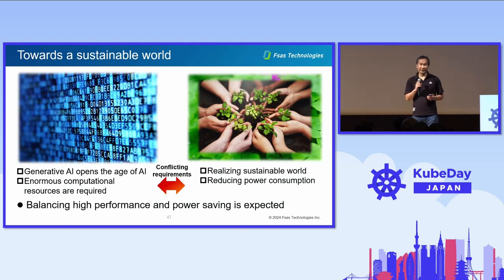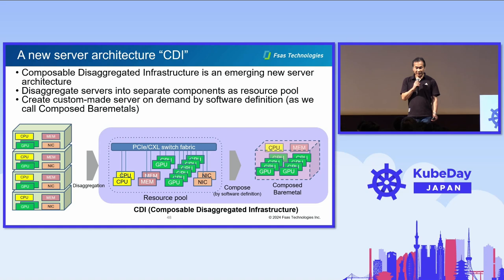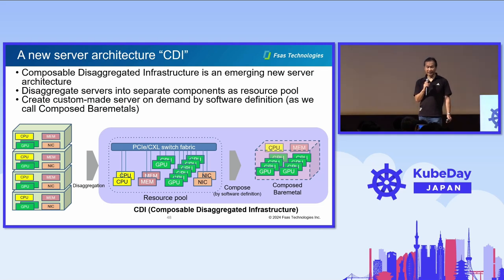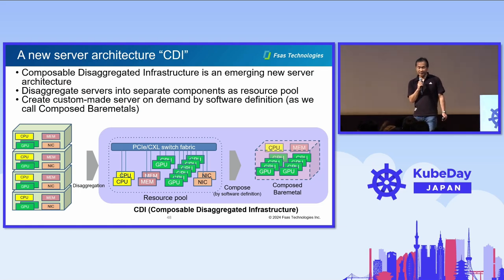Composable disaggregated infrastructure, CDI, is expected to be a solution. CDI is an emerging new server architecture. It disaggregates existing servers into separate components. Each component is connected to a PCIe or CXL switch and they work as a resource pool. By configuring the switch, users can create a custom-made server on demand by software definition.